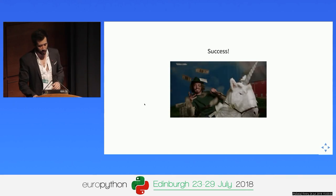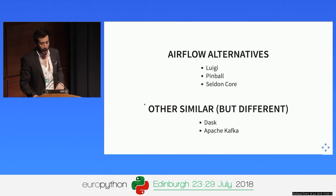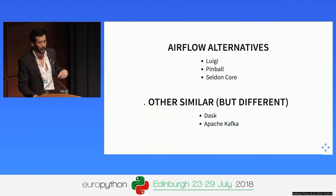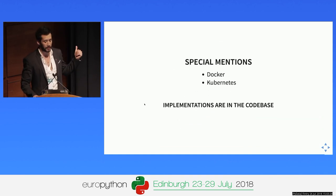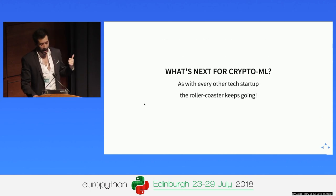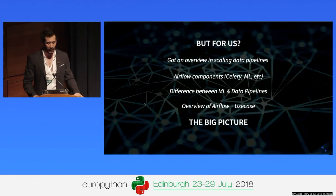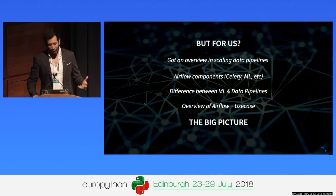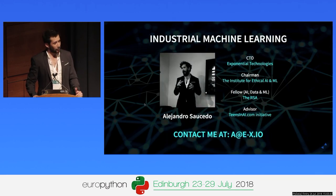The CryptoML crypto guys managed to set up their pipelines. Do check out the Apache Airflow project — I recommend getting started by reading the documentation. There are some alternatives like Luigi, Pinball, Selden Core, and others. Some are used in completely different use cases like Dask or Apache Kafka, and special mentions for Docker and Kubernetes — you can find implementations in the codebase. The cryptocurrency guys managed to sort it out. They survived — they're probably millionaires now living on their own island. But for us, we got our overview on data pipelines, the difference between machine learning pipelines and data pipelines, and an overview with a use case. Code is in the repo — please feel free to check it out. Thank you very much.